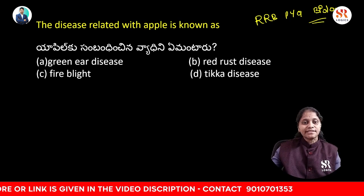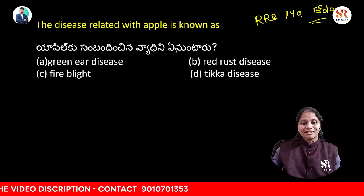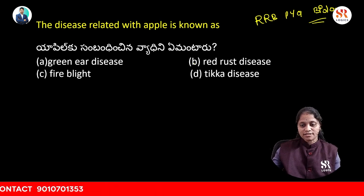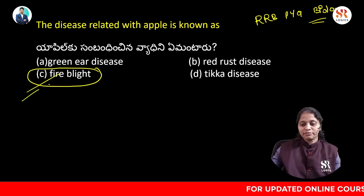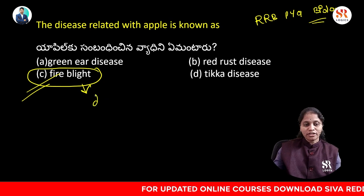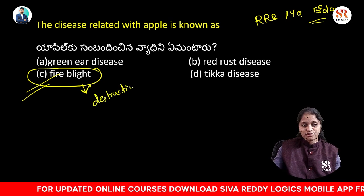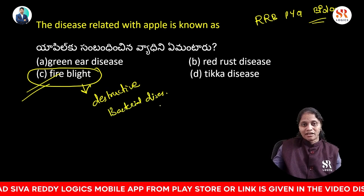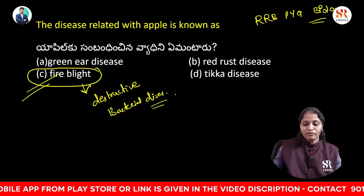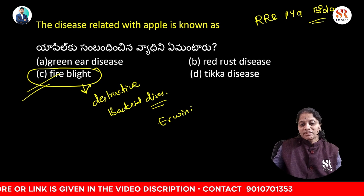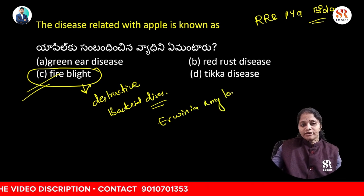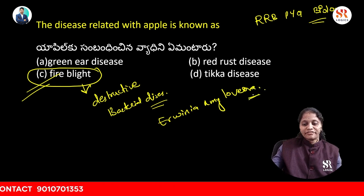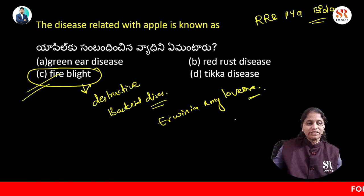First question: the disease related with apple is known as — green ear disease, red rust disease, fire blight, or ticker disease? The answer is fire blight. It is a very common and destructive bacterial disease of apples, caused by a bacteria called Erwinia amylovora, which can affect and cause damage to many plants.